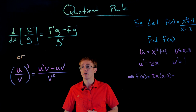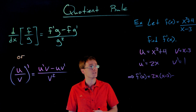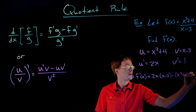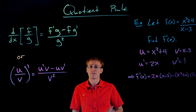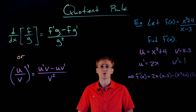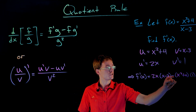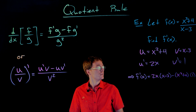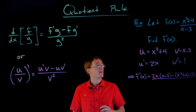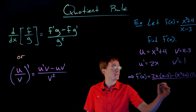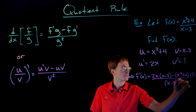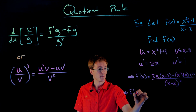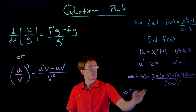Then we subtract away from that quantity another product: u times v prime. That's going to be x squared plus 4 times 1, which is easy to multiply. A really common mistake when using the quotient rule is forgetting to distribute that subtraction sign to each term in the product u times v prime. We also can't forget the denominator, which is just our original denominator squared — so that'll be x minus 3, all squared.